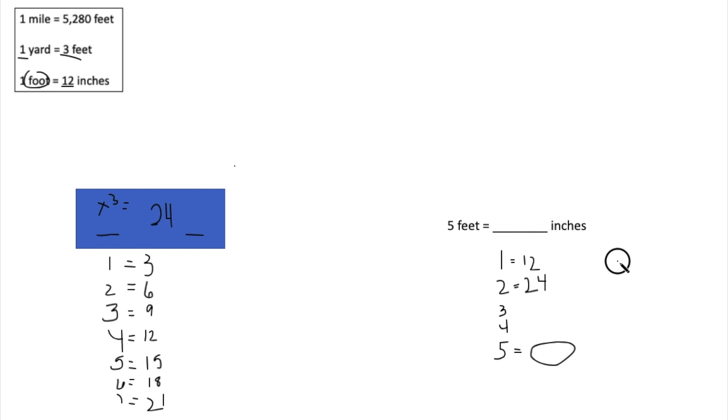And if we don't know, we can always solve. So we have twelve times five, five times two equals ten, carry my one, five times one equals five, plus one equals sixty. So how many inches are in five feet? The answer to that is sixty.